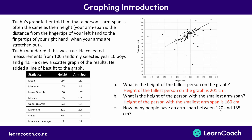How many people have an arm span between 120 and 135 centimeters? We look at the line for 120 cm and count people up to 135 cm, which is halfway between the gridlines. Starting at 120 cm we count one person, then two people — and then we're up near 140 cm. So there are only two people with an arm span between 120 and 135 centimeters.